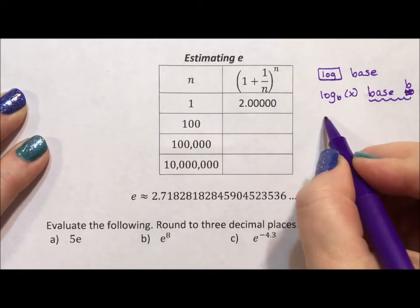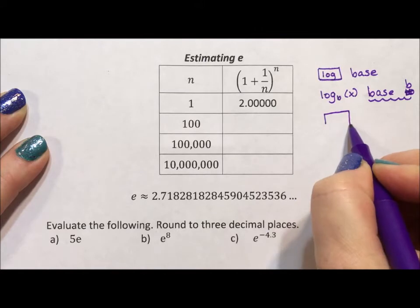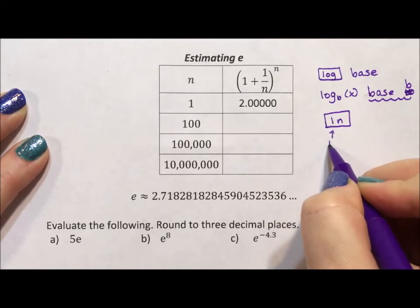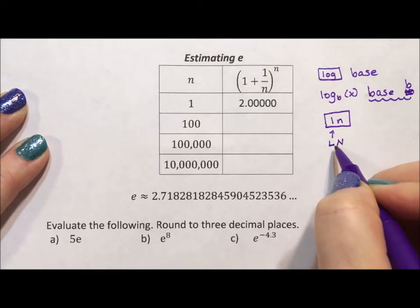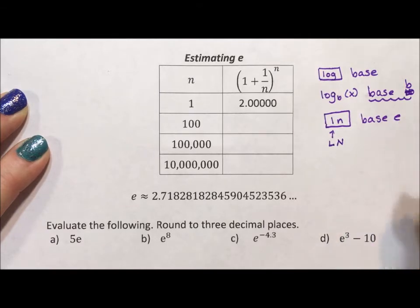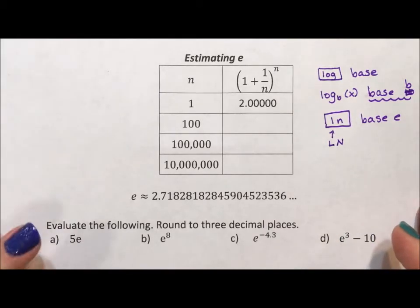The third type of log and the second button on your calculator is ln. That is ln for log natural. This is base e. E becomes an important number the further up you go in math.